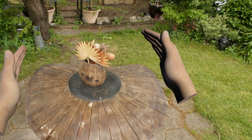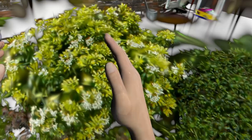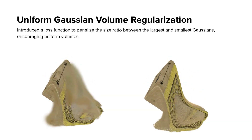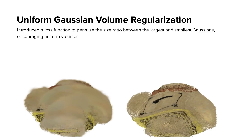In this garden scene, only the objects within the localized simulation region can be deformed, such as the desk and the shrub. We also introduced a loss function to penalize the size ratio between the largest and smallest Gaussians, encouraging uniform volumes. With regularization, volumes remain consistent, preserving details and visual fidelity even under extreme deformation.